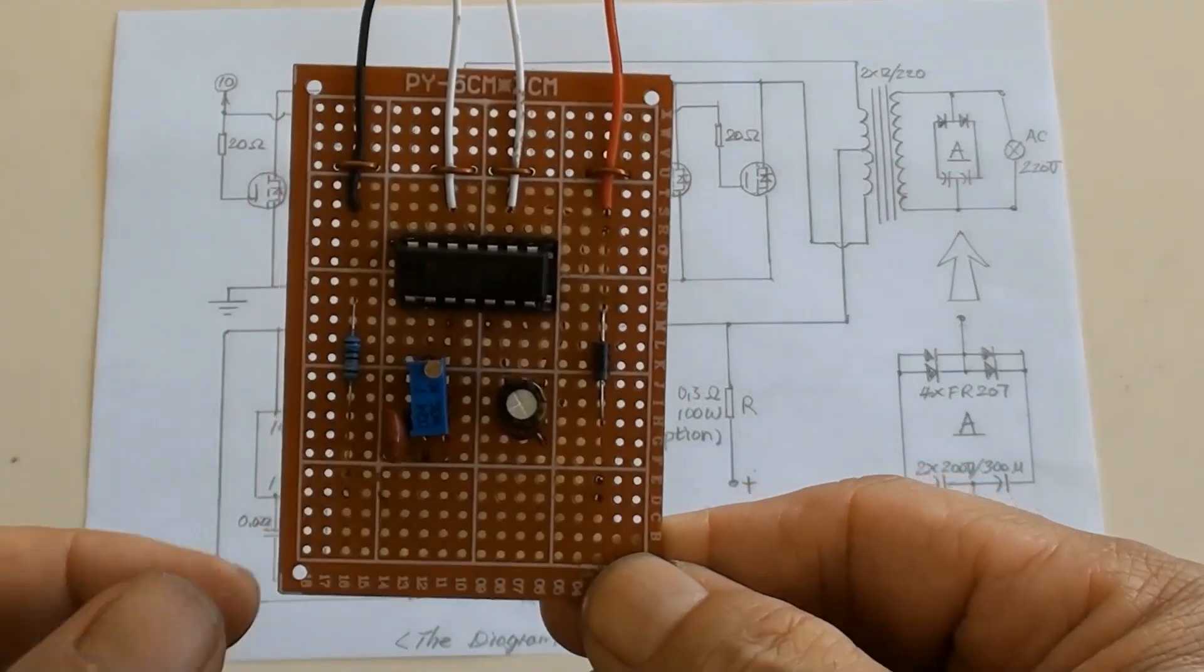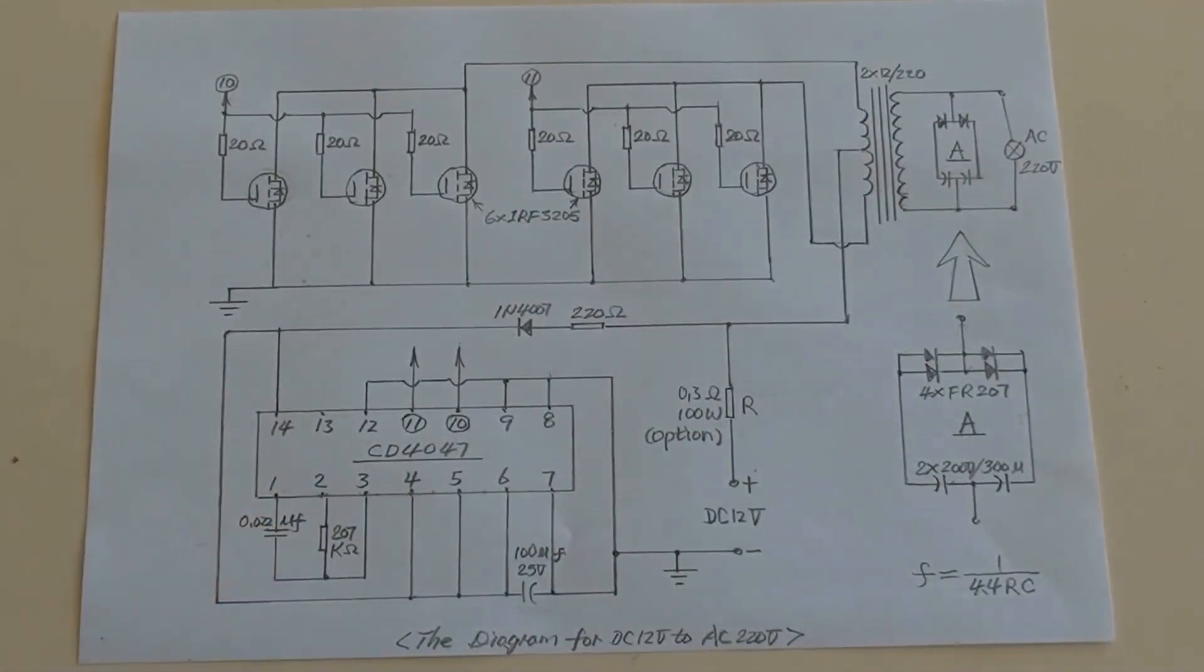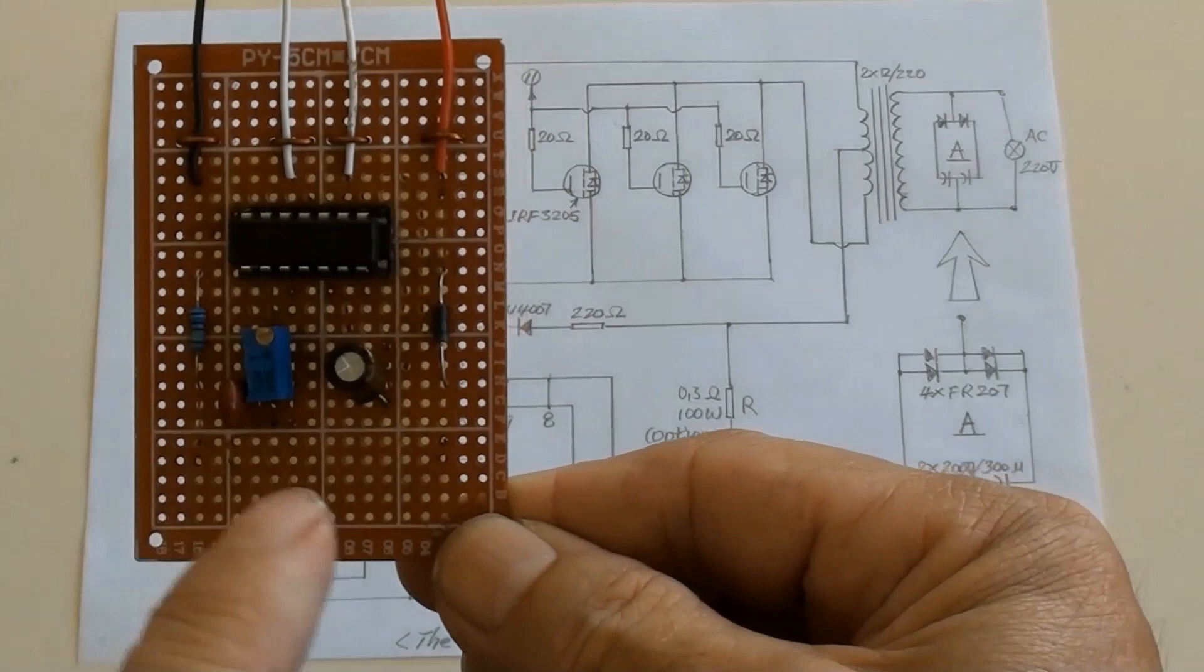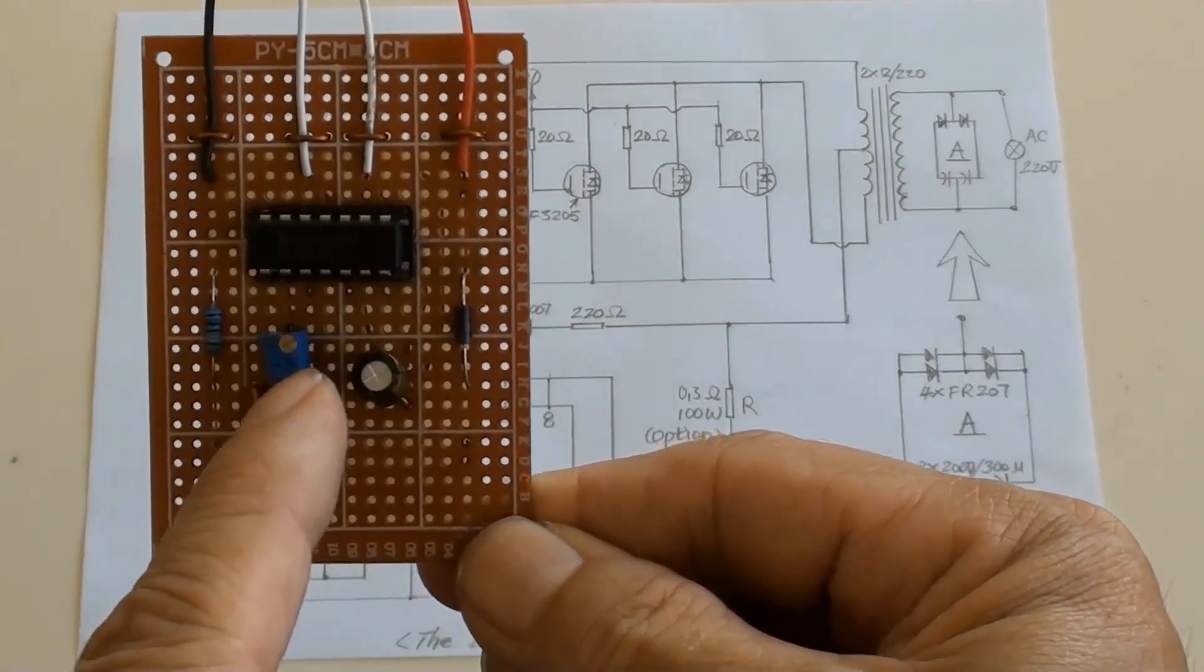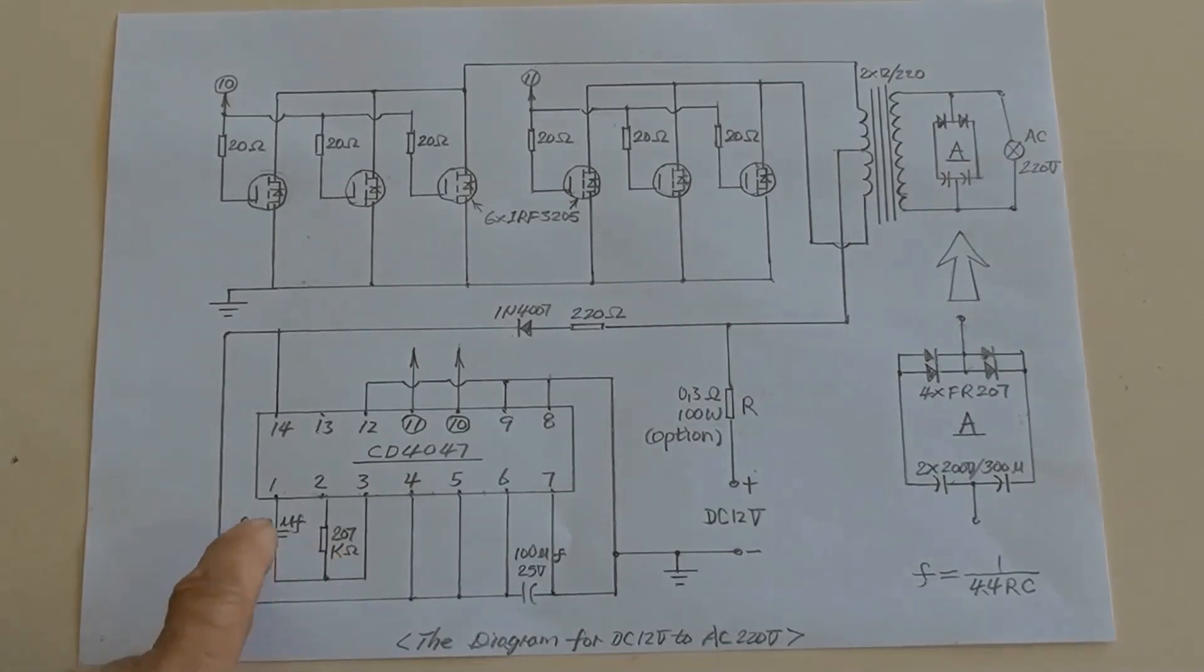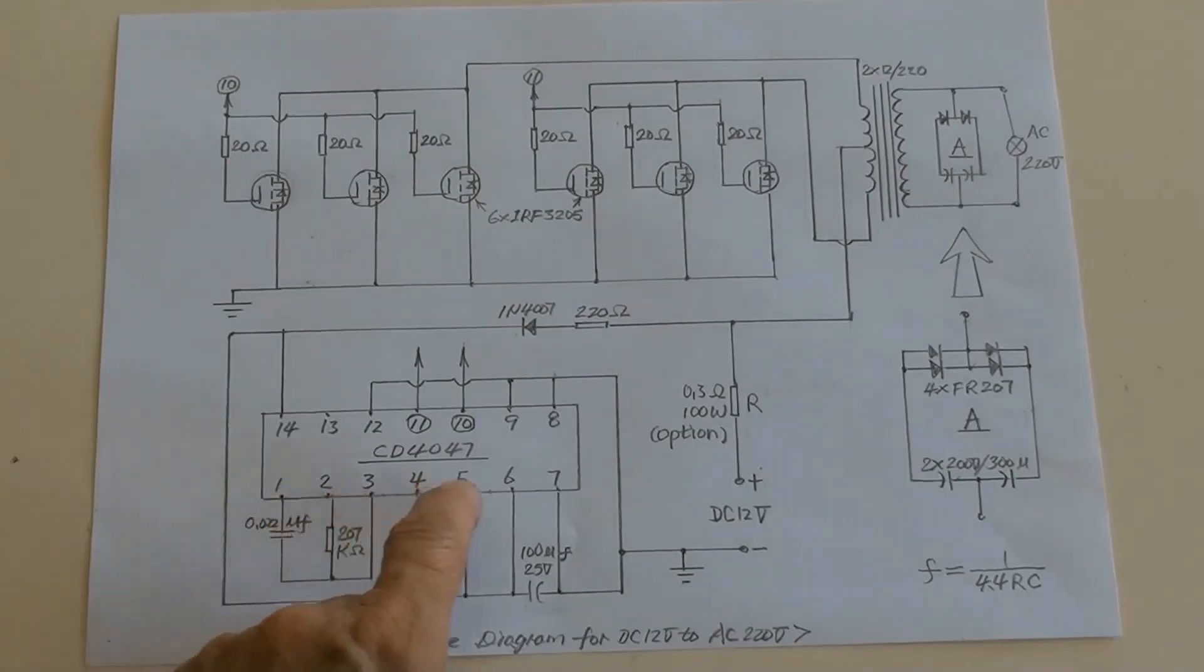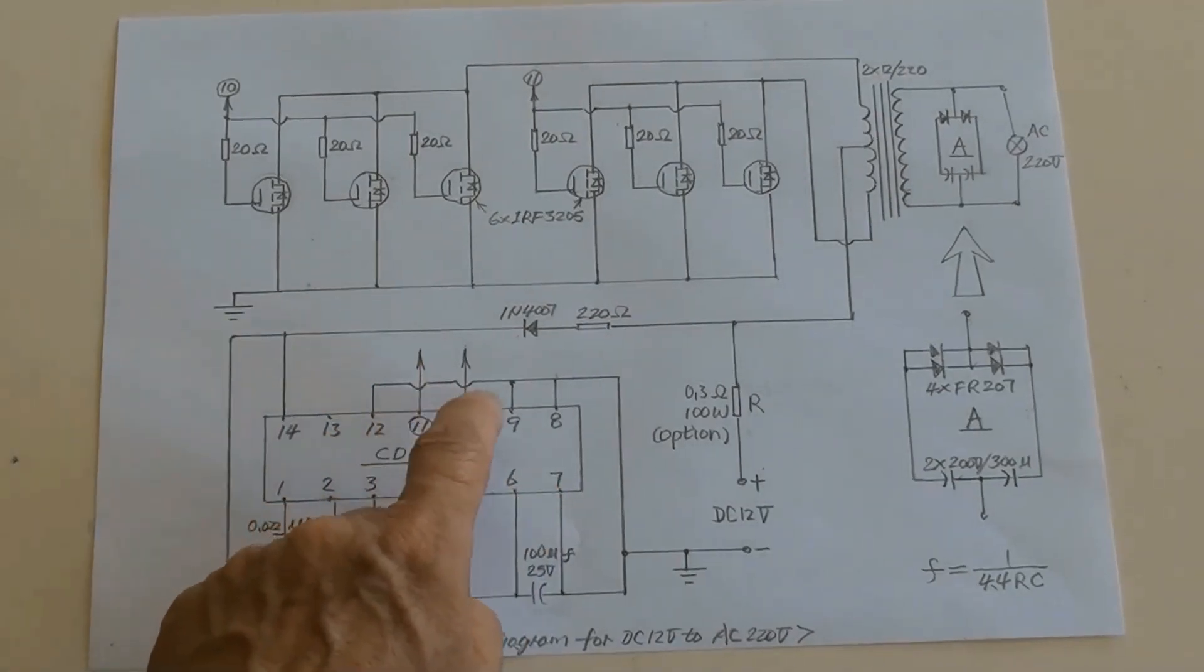The capacitor of 0.022 MUF is here. And a potentiometer of 207k ohms is there. A capacitor and potentiometer's values together determines the frequency of output for pin 10 and 11.